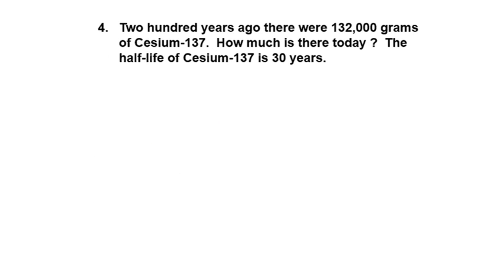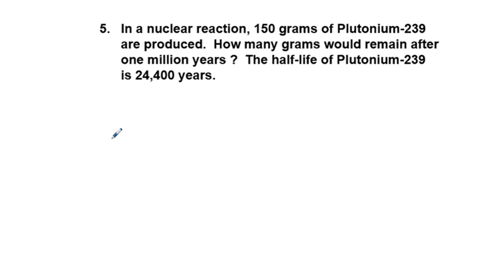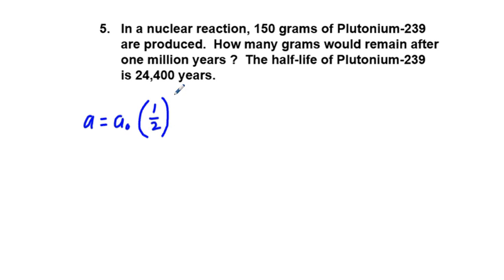Next is problem 5. In a nuclear reaction, 150 grams of plutonium-239 are produced. How many grams would remain after 1 million years? The half-life of plutonium-239 is 24,400 years. Same formula: A equals A sub-zero times one-half to the power of time over half-life. The units have to be the same. If you looked at problem 3, we had the half-life in 1.5 days and 30 days. Here, we have a million years and 24,400 years, so the units match.